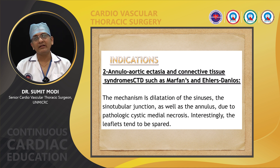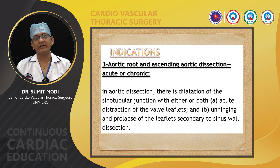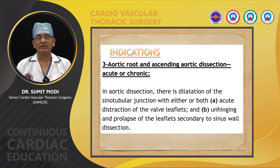Now let us see what happens in aortic dissection. Whether acute or chronic, aortic dissection leads to dilatation of the sinotubular junction, with distraction of the wall leaflets and unhinging and prolapse of the leaflets secondary to sinus wall dissection.